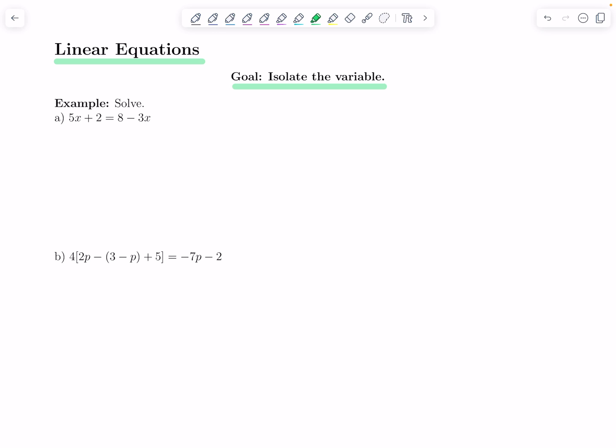It's up to you if you want to get the variable isolated on the left side or the right side of the equation. Most of the time we put it on the left. I'm going to try to get all the terms with x on the left side. That negative 3x needs to move, so I'm going to add the opposite. I'm going to add 3x to both sides.